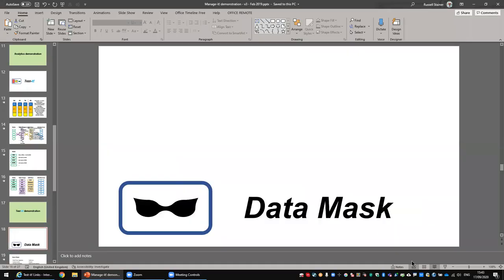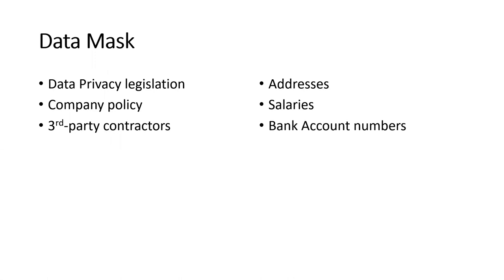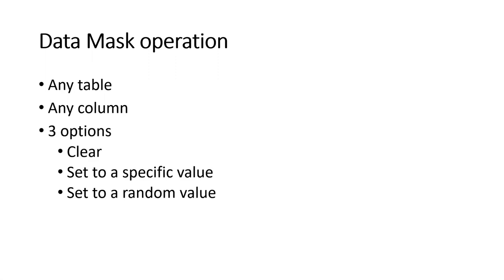The third part of Manage IT is data mask. Data mask is there to comply with data privacy legislation like GDPR, but also any company policies and best practices. For example, if you've got a lot of third-party contractors working in development and test environments, maybe you don't want them to see things like addresses, salaries, or bank account numbers. So when you copy the data down with Test IT, you can also apply the data mask to the Test IT data copies. For any table in JD Edwards, any column in any table, you can apply three options: you can clear the values in those cells in that column, you can set the columns to specific values, or you can set them to random values.